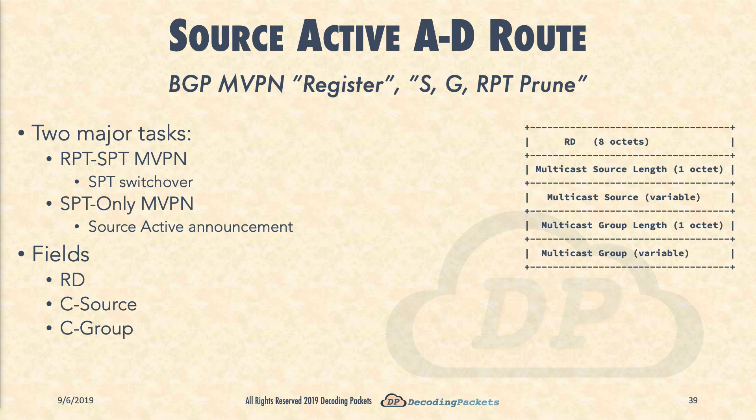In this video, we continue that journey by introducing the route that on the surface replaces the PIM register message. But we will first scratch, then strip, then annihilate that surface to try to get to the full story. It is a tough ask to introduce this route without referencing something we have not yet covered with next generation MVPNs.